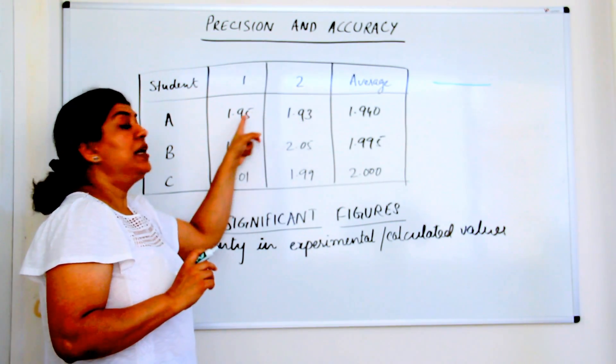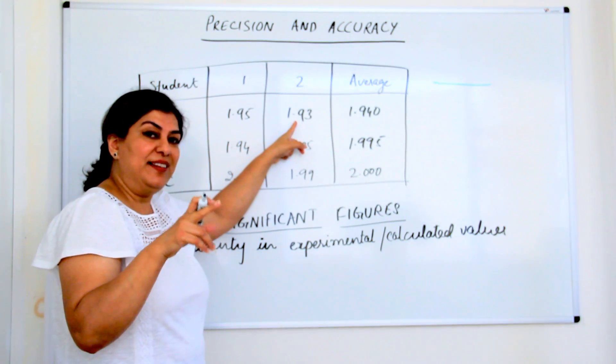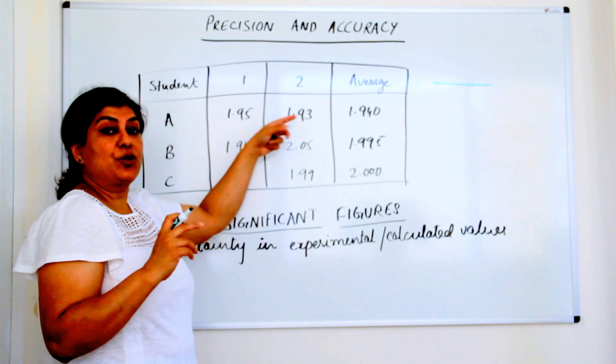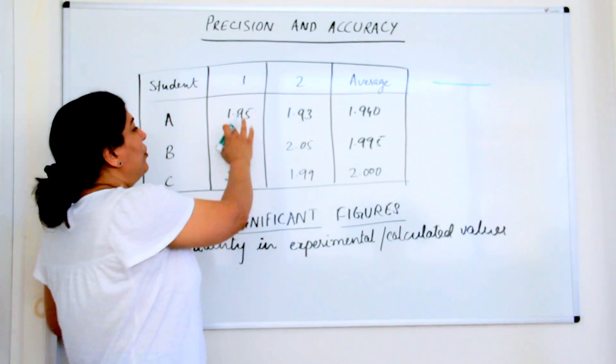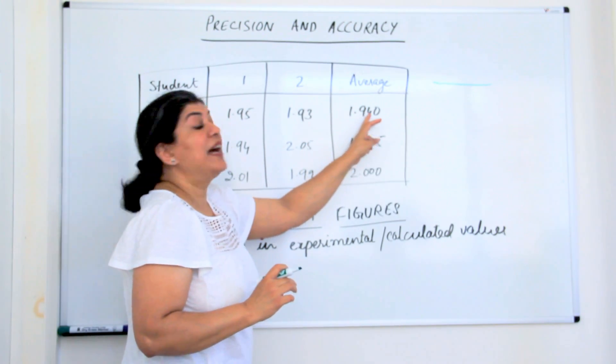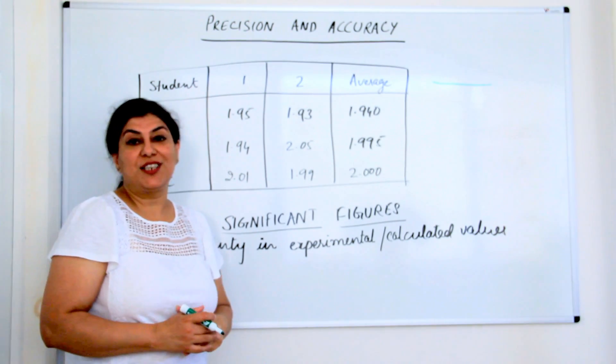Both of these are very close to each other. But what is the actual reading? The actual reading is 2.00 which is quite far from this. Therefore, these two measurements, the average of these two is 1.94 which is pretty precise but not accurate.